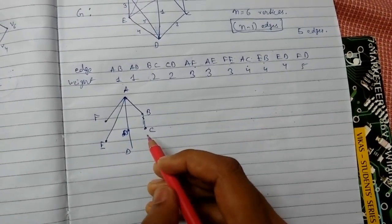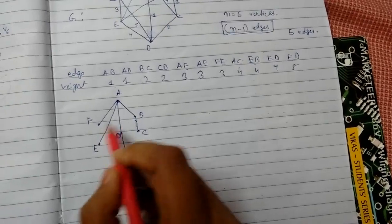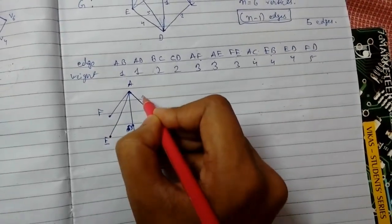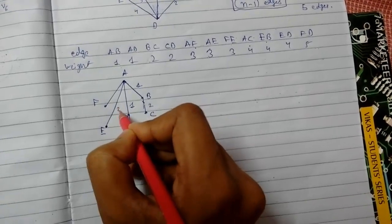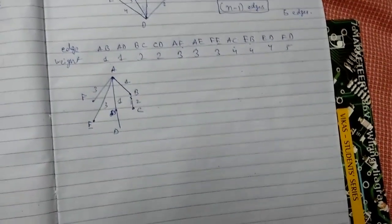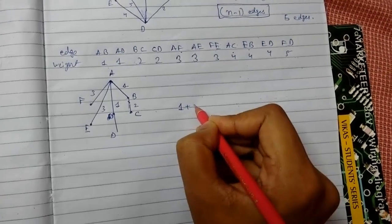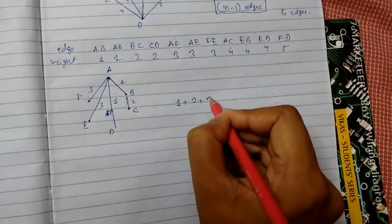So we have our spanning tree. Now we will just write the weights of it: 1, 2, 1, 3, and 3.